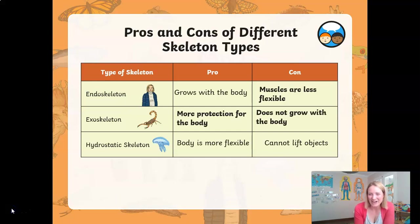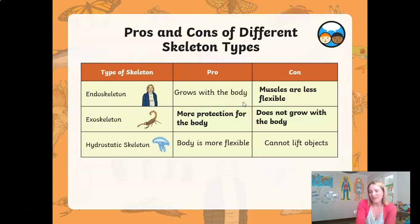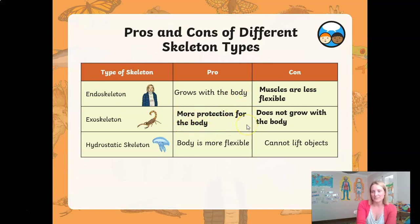For an endoskeleton creature, the benefit is that the skeleton grows with the body. However, a disadvantage is that the muscles are less flexible. For an exoskeleton creature, having your skeleton on the outside like a suit of armor provides more protection for the body. But a disadvantage is that the skeleton does not grow with the body, and therefore they have to shed and create a new one.